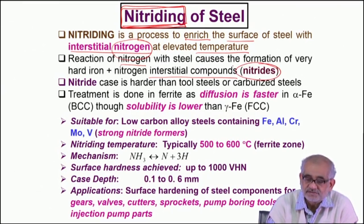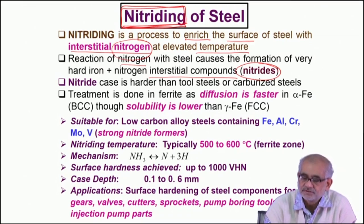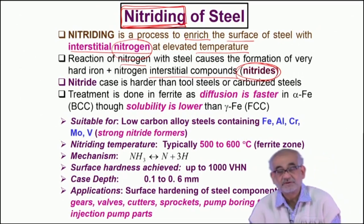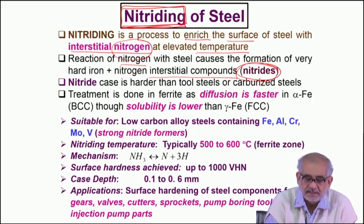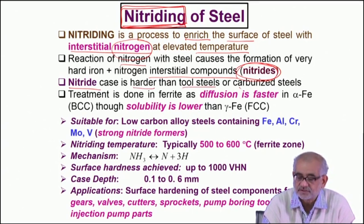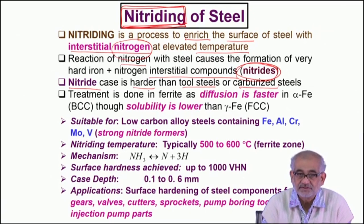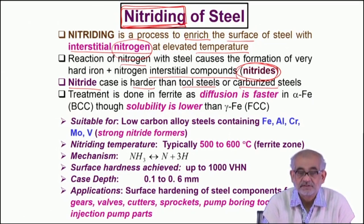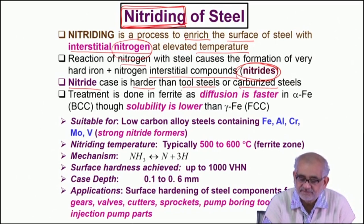The entire process of nitriding is based not on solid solution strengthening and subsequently formation of a supersaturated solid solution. Nitrogen does get dissolved up to a certain extent, but principally the entire process is based on formation of a series of nitrides. The nitrided case is actually harder than even tool steels or carburized steels, so in that respect you derive greater advantage.